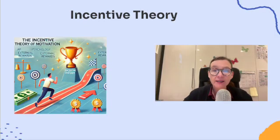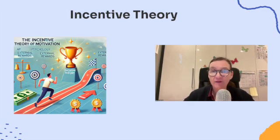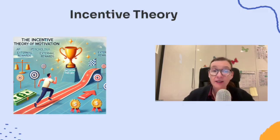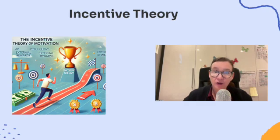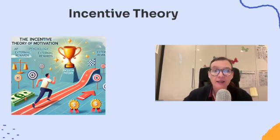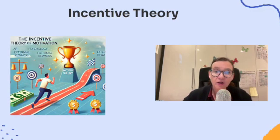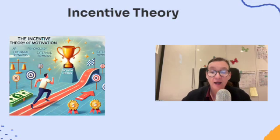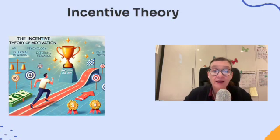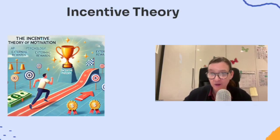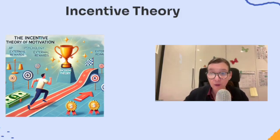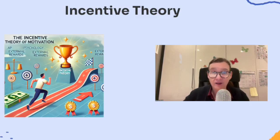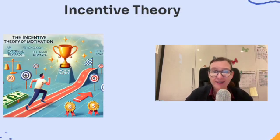Next is incentive theory — a key idea in understanding what drives behavior. This theory says our behaviors are motivated by the promise of rewards. These rewards are extrinsic, meaning they come from outside ourselves. For example, a student might study hard to earn good grades or receive praise from their parents. The key idea is that a reward increases the likelihood of a behavior happening again; if the reward is appealing, you're more likely to repeat the behavior.